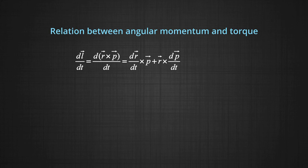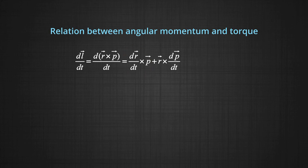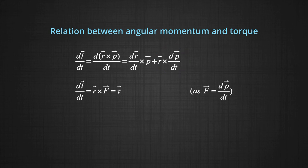If we differentiate both sides, we get dL/dt equals d/dt of (r cross p). Using the product rule we can break it further as dr/dt cross p plus r vector cross dp/dt. The first term is zero because it contains the vector product of a vector with itself, as dr/dt is velocity and p is momentum, the angle between the two will be zero. In the second term we replace dp/dt by net force. Hence rate of change of angular momentum becomes r cross F, which is actually torque.